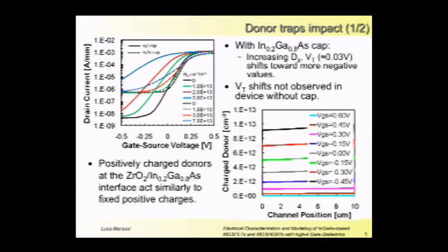The situation is different when we consider the case of the device with cap. Increasing the amount of donors at the interface, we see the threshold voltage moving toward a more negative value. This phenomenon is due to the presence of charged donors at the interface when the device is near inversion condition. In particular, in this line for these voltages, you are near the threshold voltage and there is still some donor positively charged.